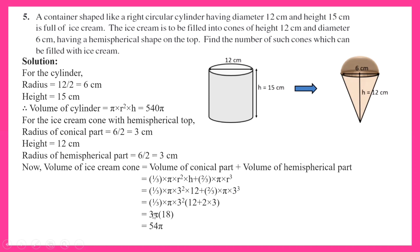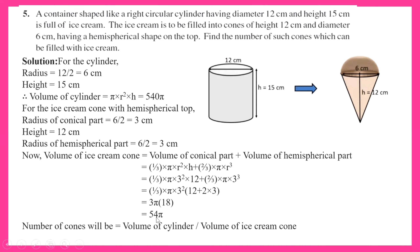The number of cones equals the volume of the cylinder divided by the volume of each ice cream cone. The volume of the cylinder is 540 pi and the volume of each ice cream cone is 54 pi. So the total number of cones comes out to be 10. That is the answer.